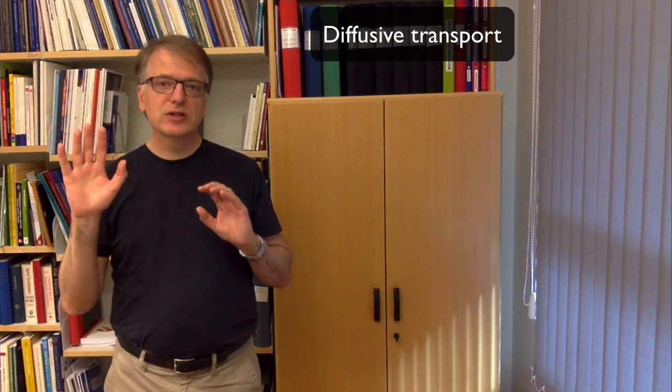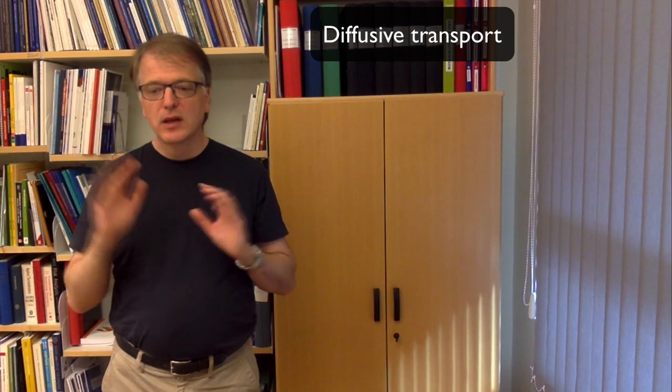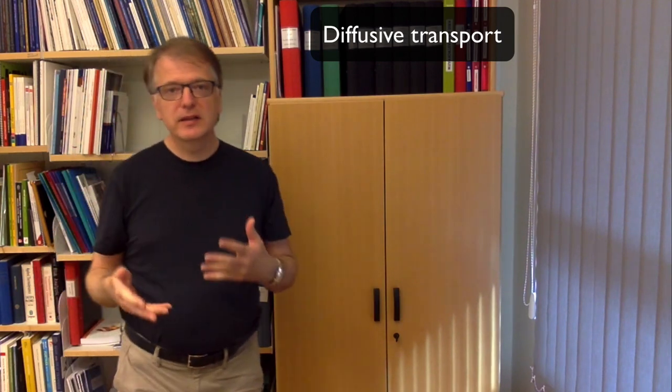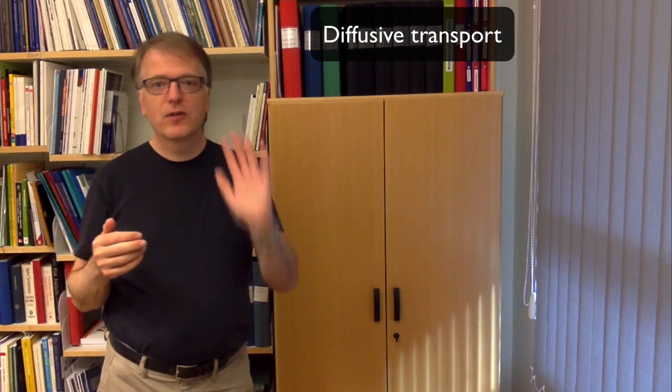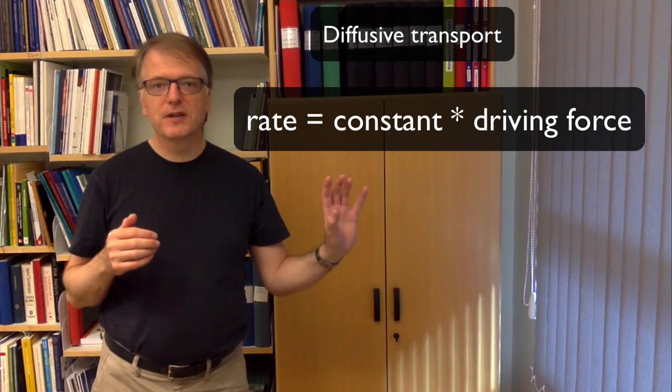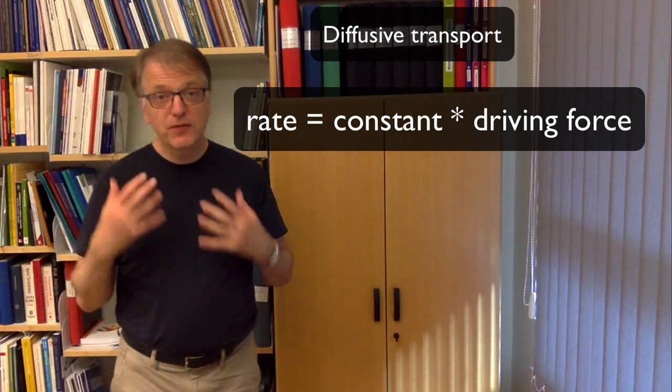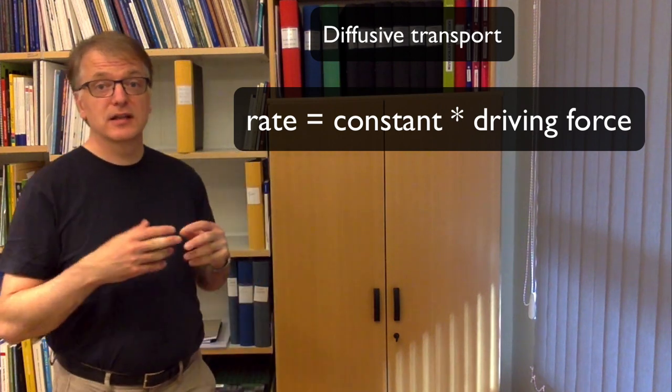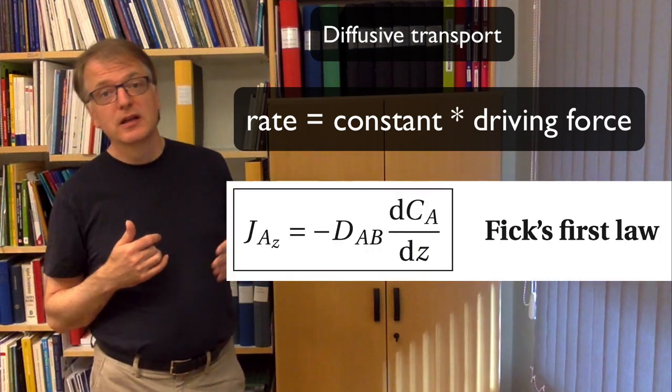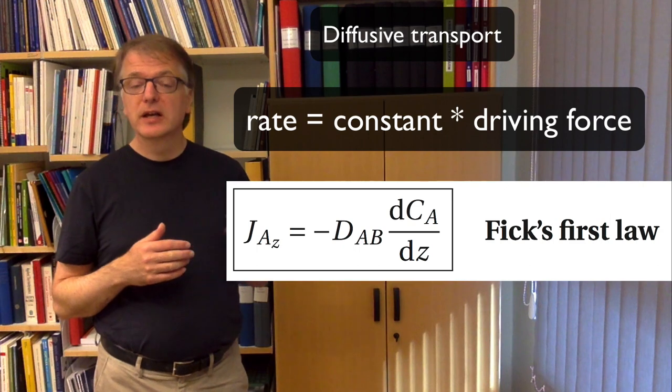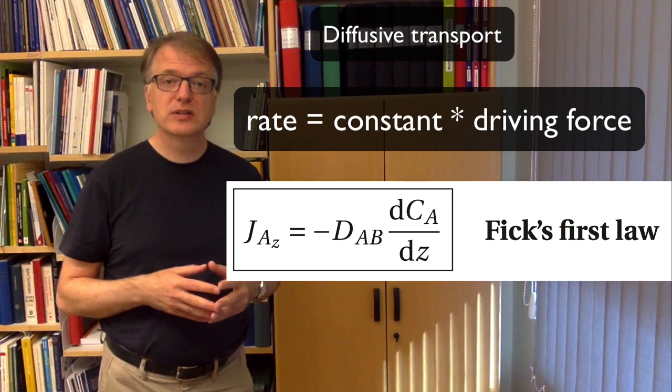Well, diffusion moves things from high concentration to low concentration. So the rate is some kind of constant times a difference or a gradient. And what Fick's first law states is that the molar transport equals a diffusivity times a concentration gradient.